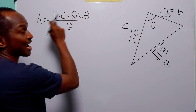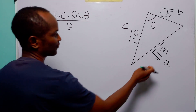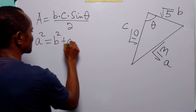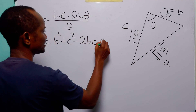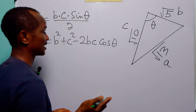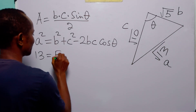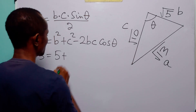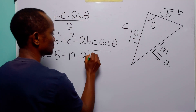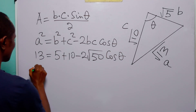To find the area of this triangle we know b and c, but before we can find sin θ we must first find cos θ using the cosine rule. For this triangle we have a² = b² + c² − 2bc·cos θ. Substituting: a² = (√13)² = 13, b² = (√5)² = 5, c² = (√10)² = 10, minus 2 × √5 × √10, which is √50, multiplied by cos θ.